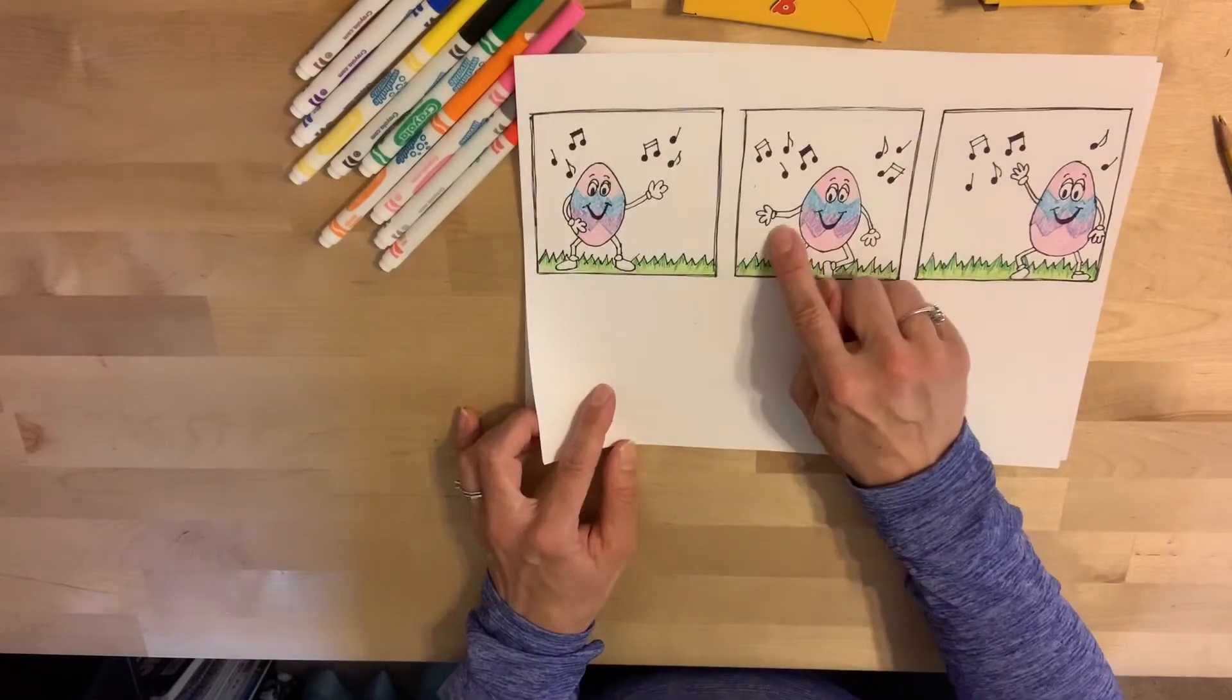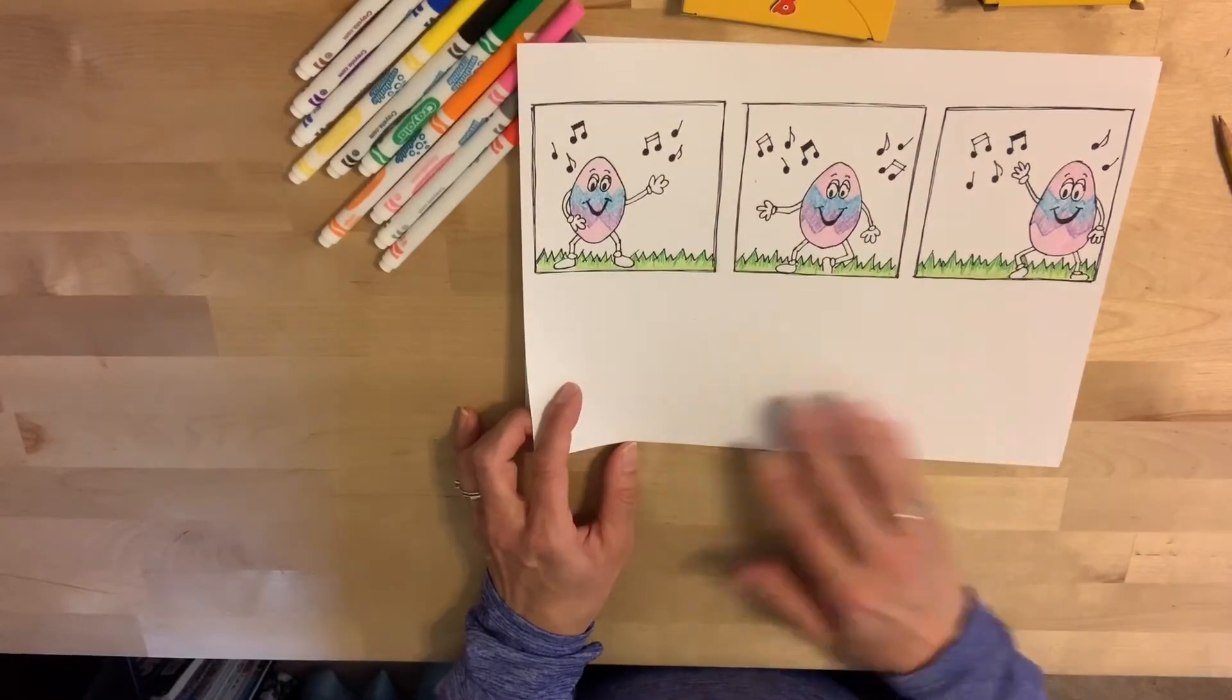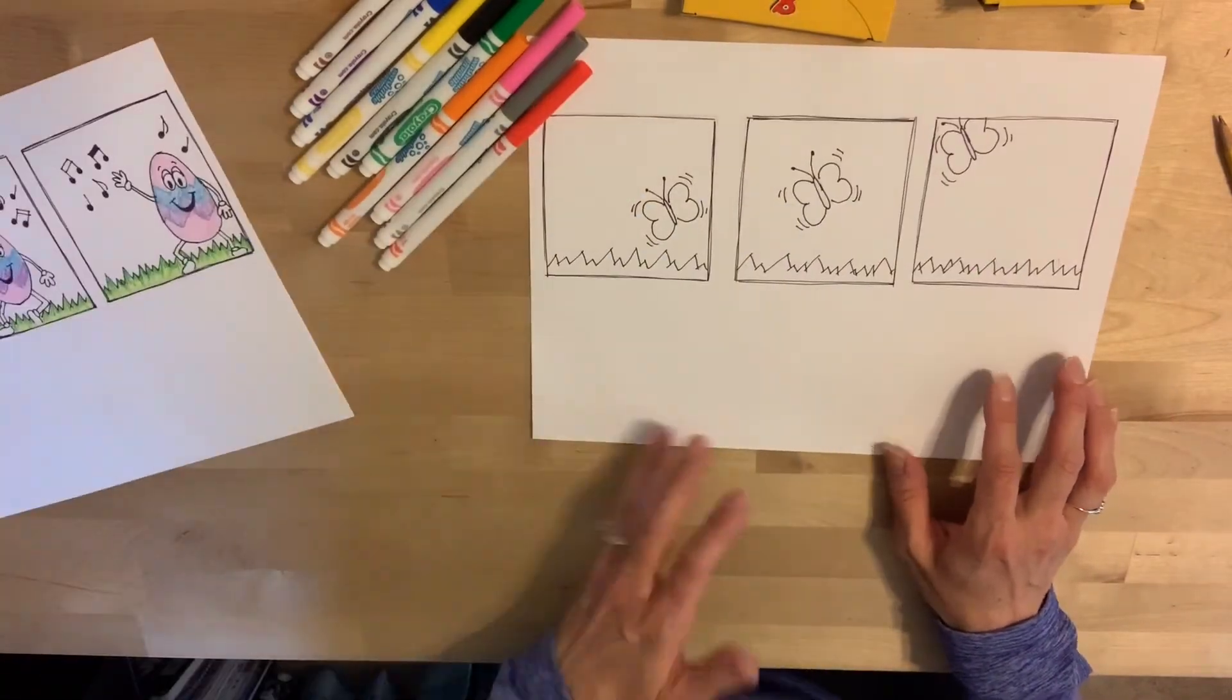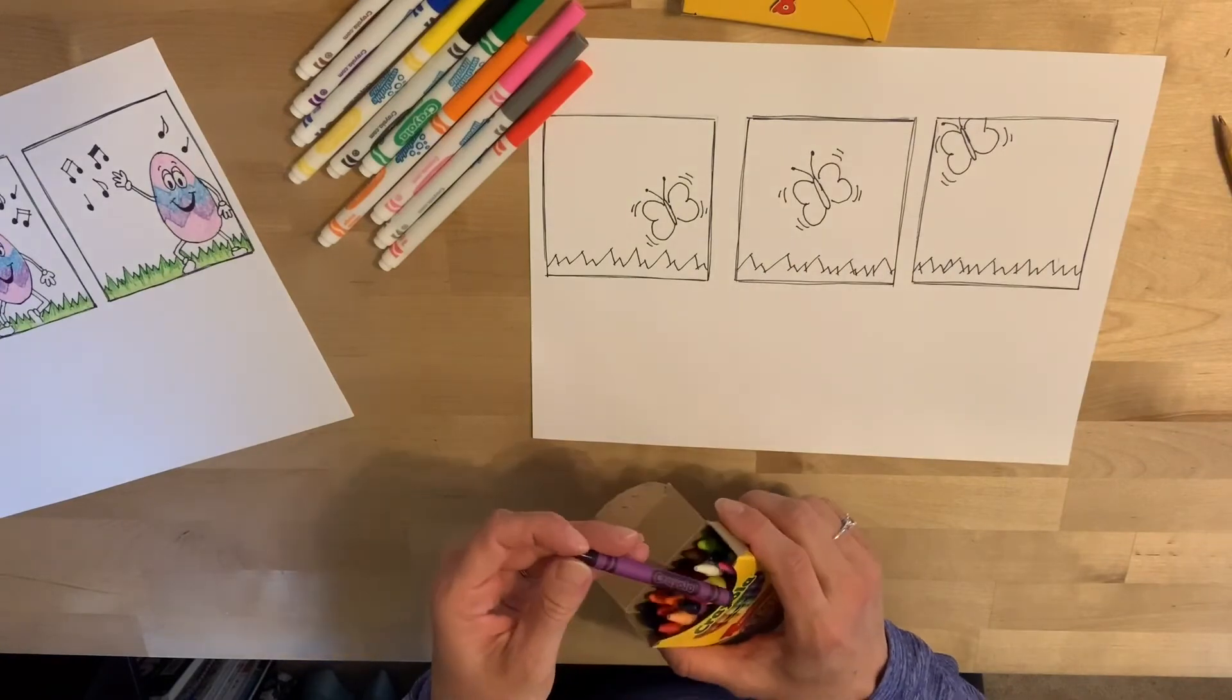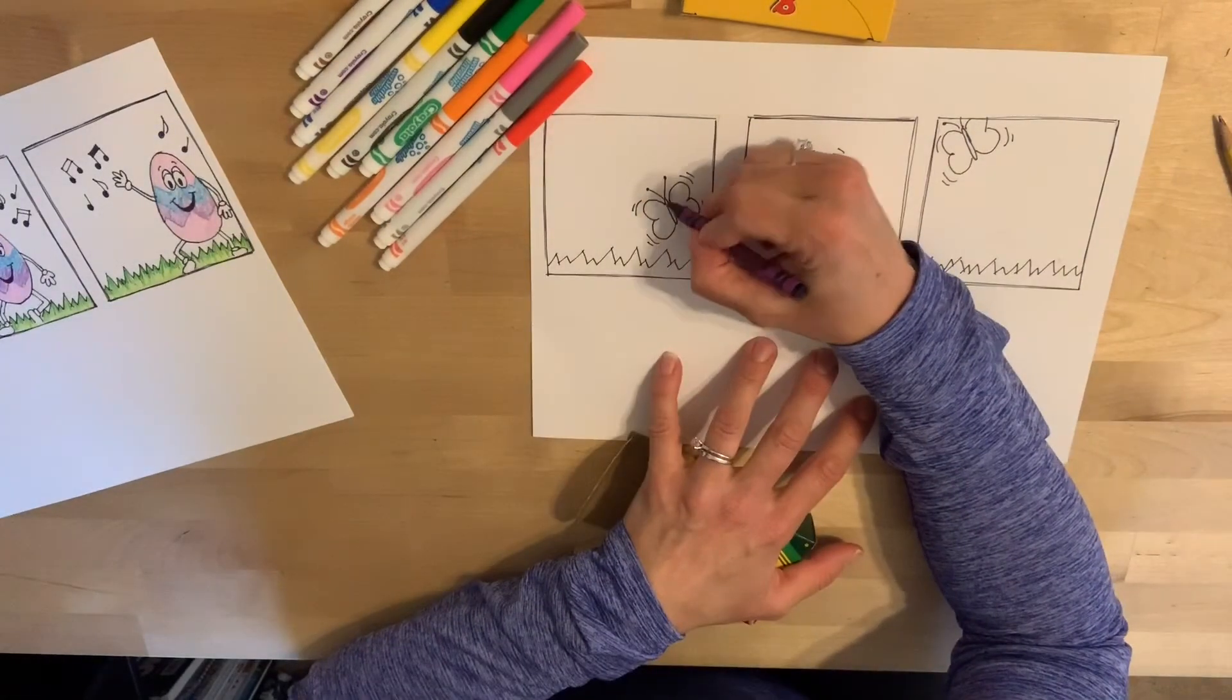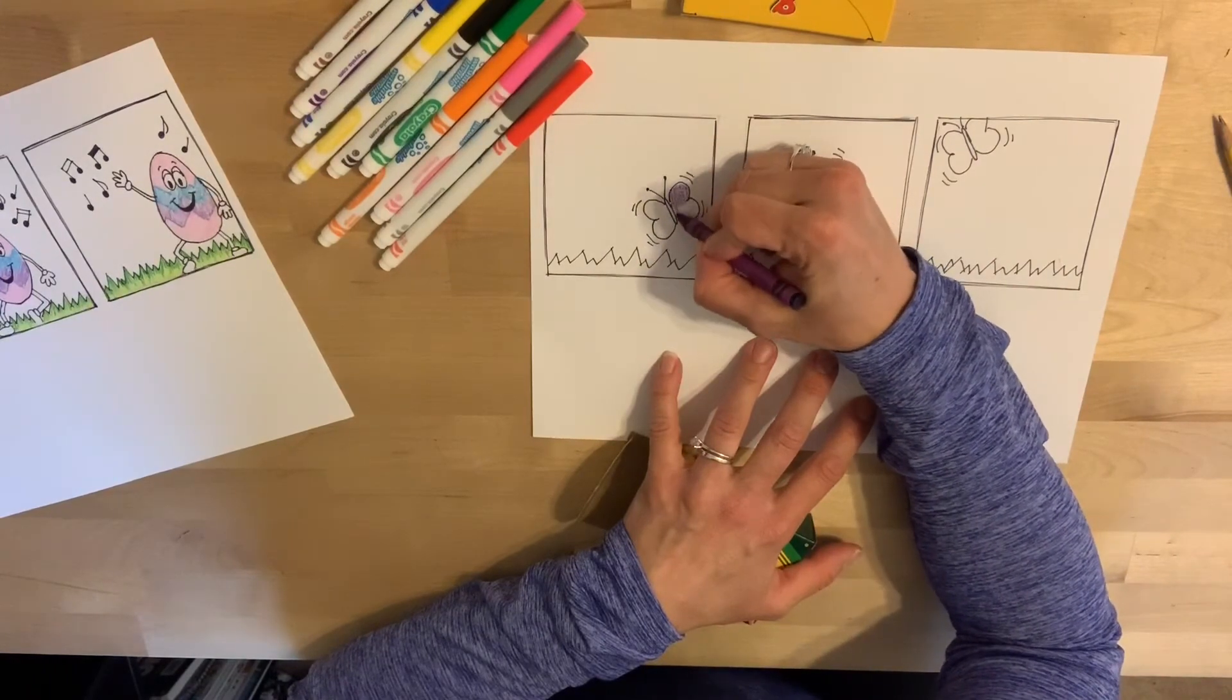If you wanted, you could even take watercolor and color the sky behind the egg, or behind your item, if you want. It's really up to you. Just as long as you're making sure each thing is the same color in all three frames.